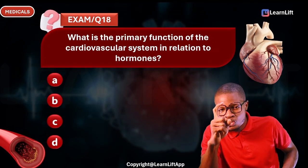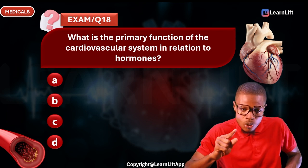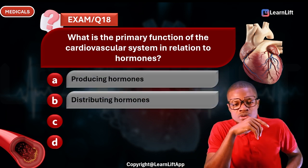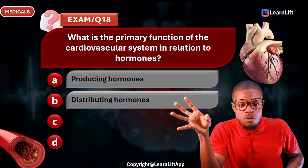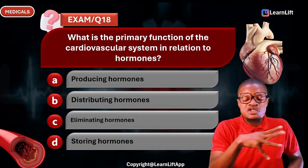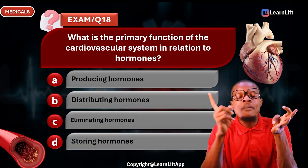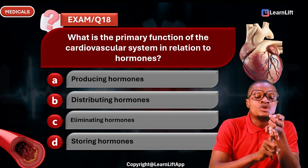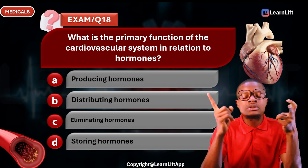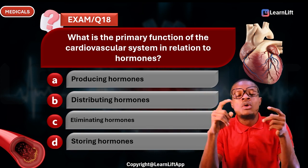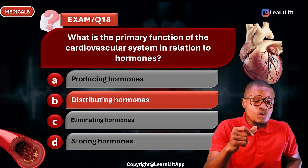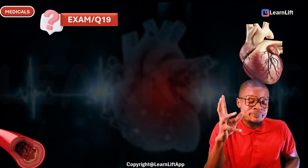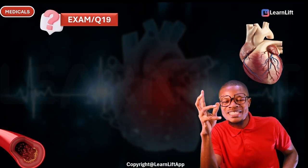Question eighteen: What is the primary function of the cardiovascular system in relation to hormones? Option A: producing hormones. Option B: distributing hormones. Option C: eliminating hormones. Option D: storing hormones. Hormones are produced in the glands, not by the CVS. The correct answer is Option B — distributing hormones.